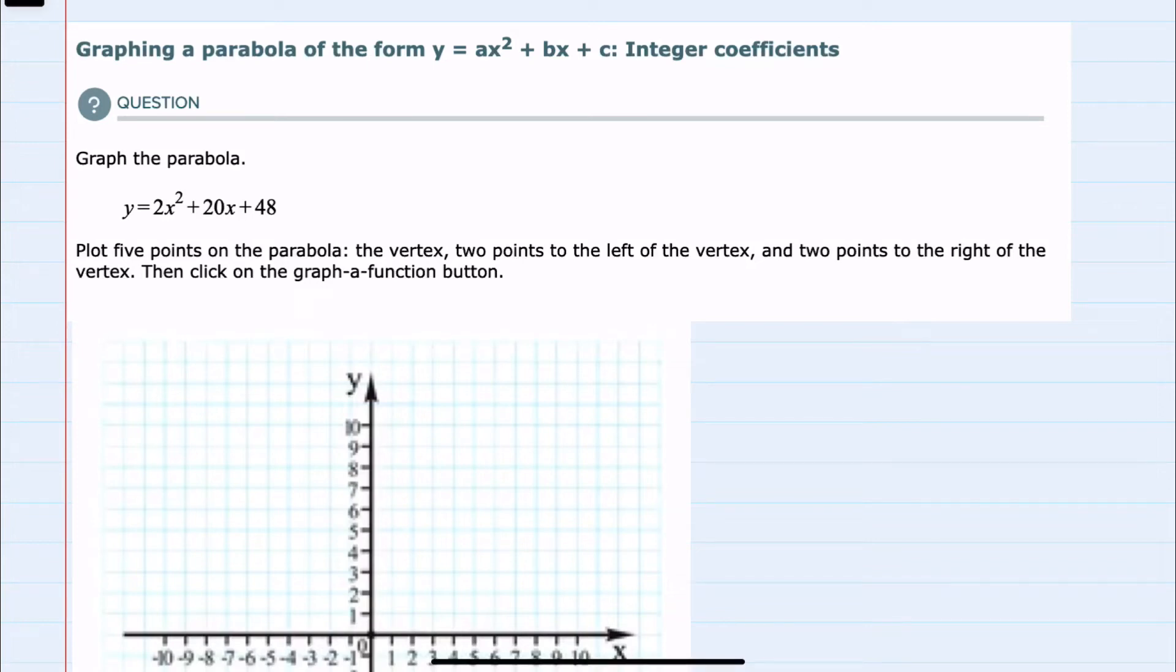In this video I'll be helping you with the ALEKS problem type called graphing a parabola of the form y equals ax squared plus bx plus c integer coefficients. We're given the parabola y equals 2x squared plus 20x plus 48 and we're asked to graph it by finding five points.